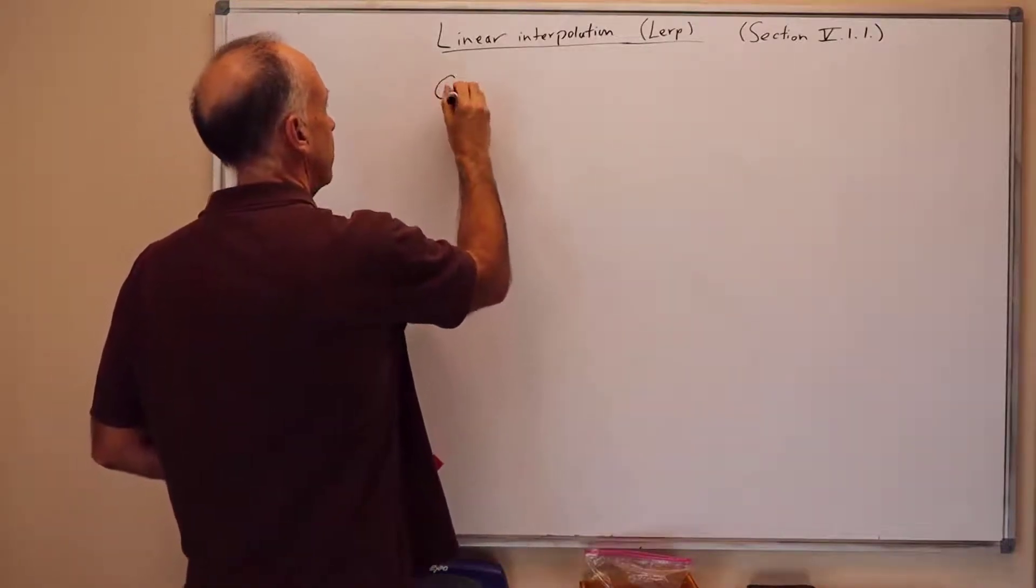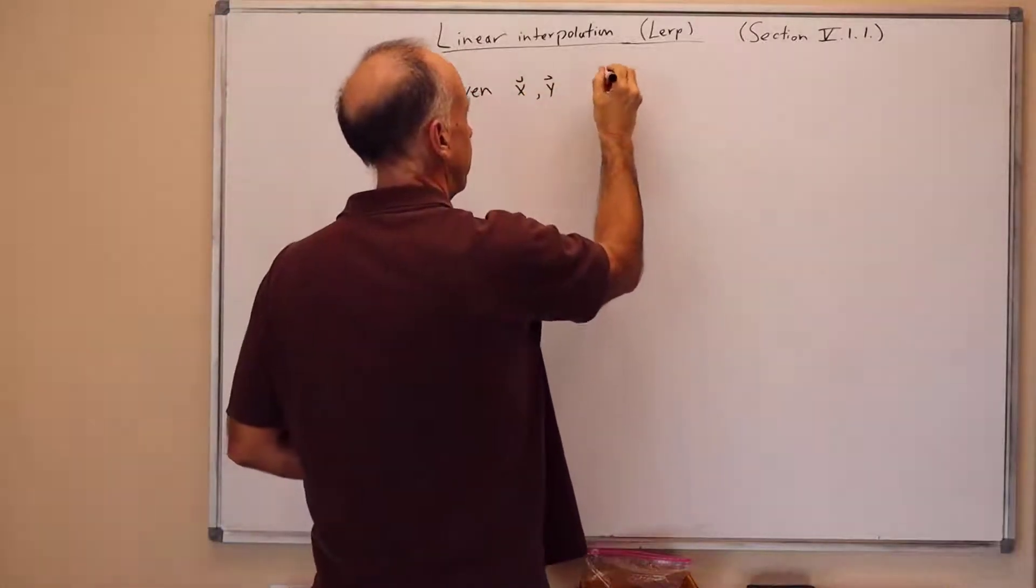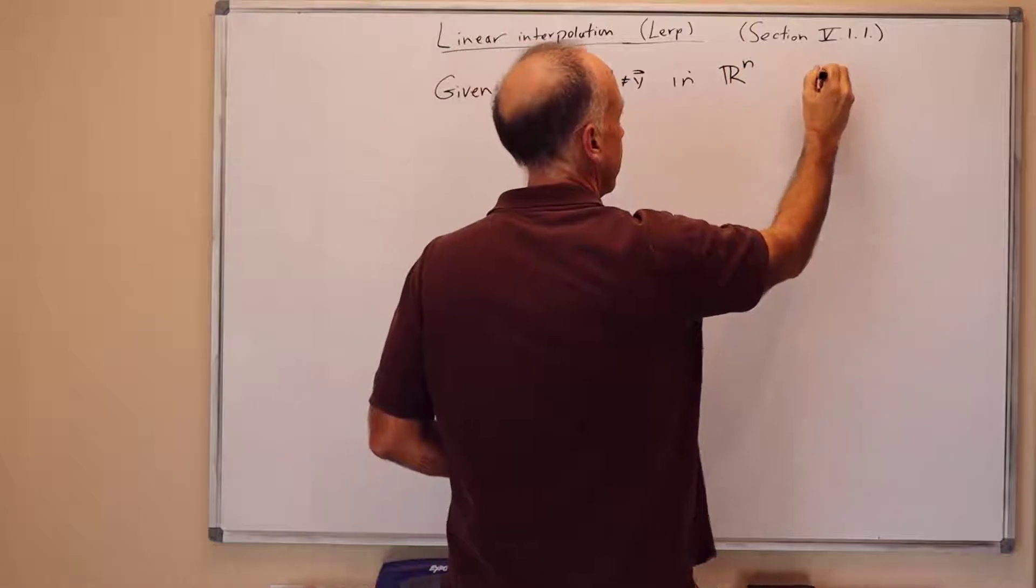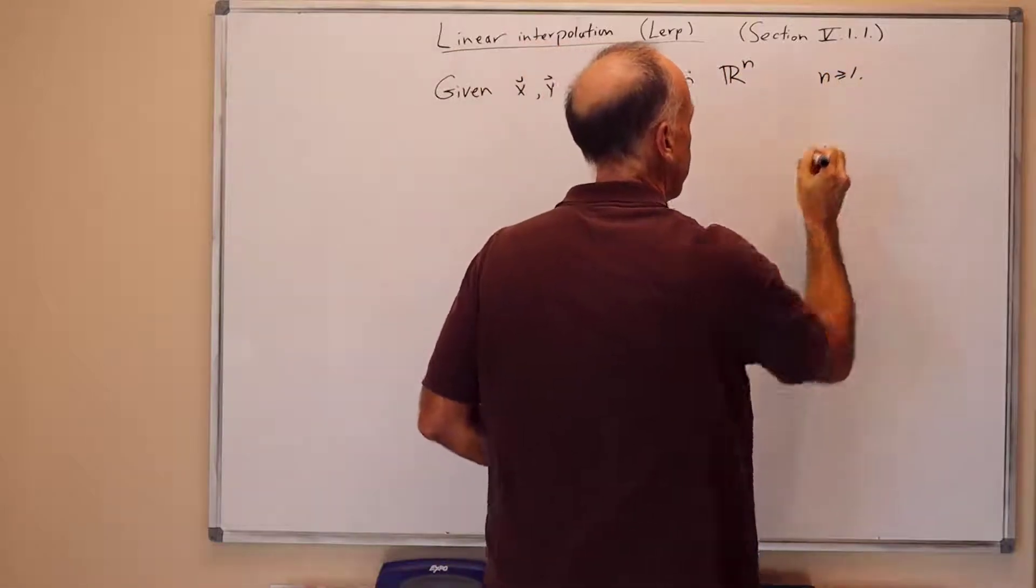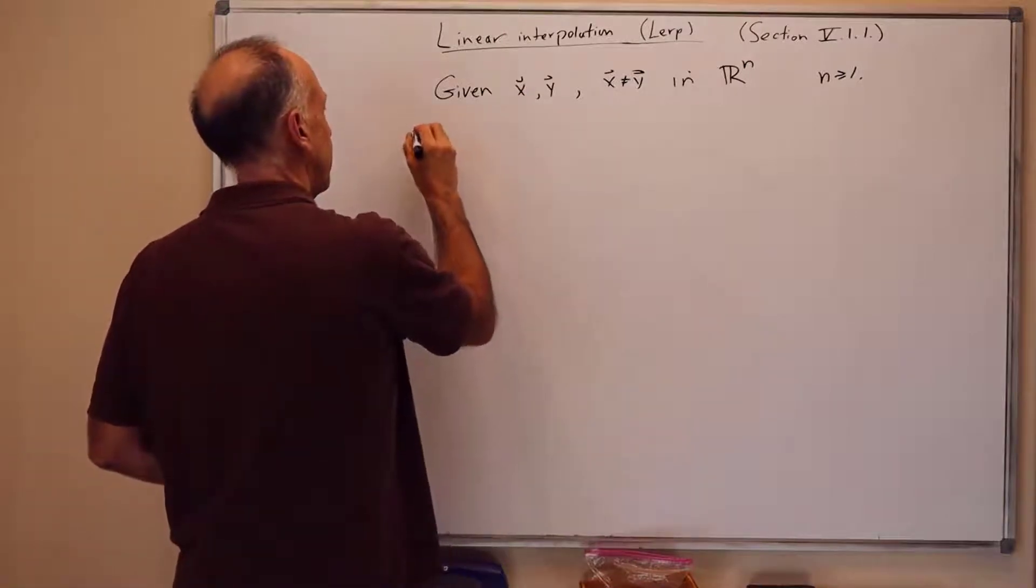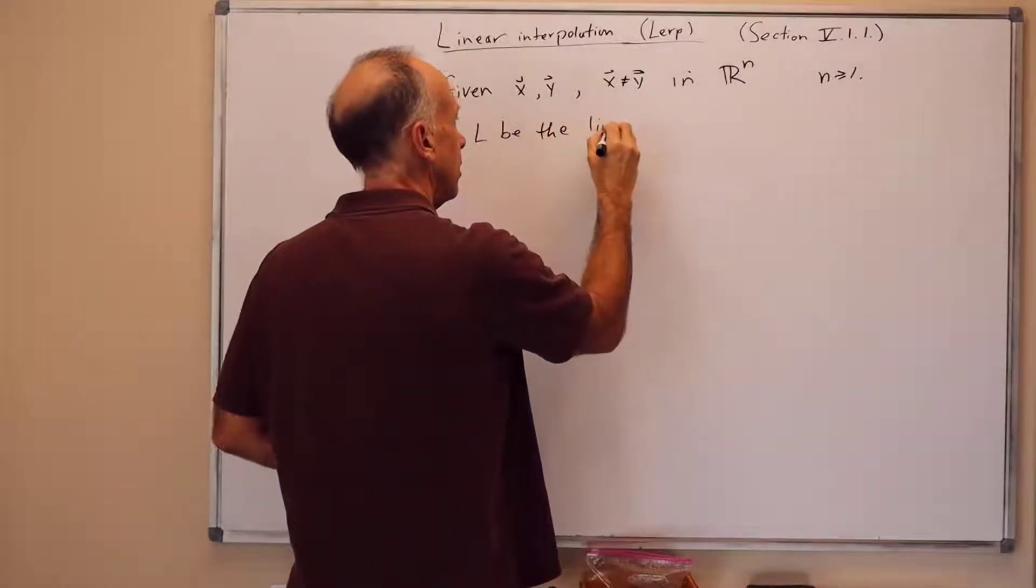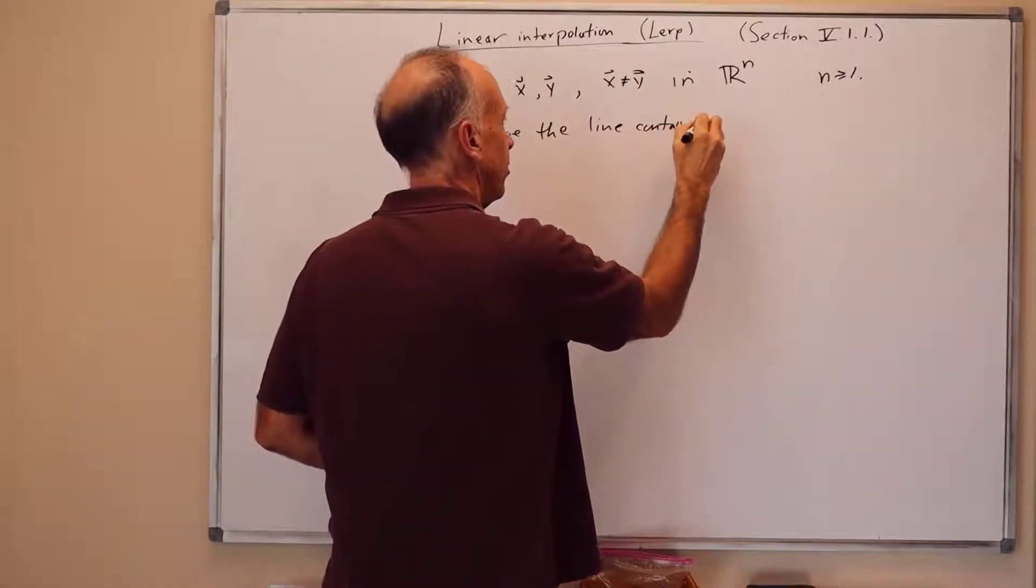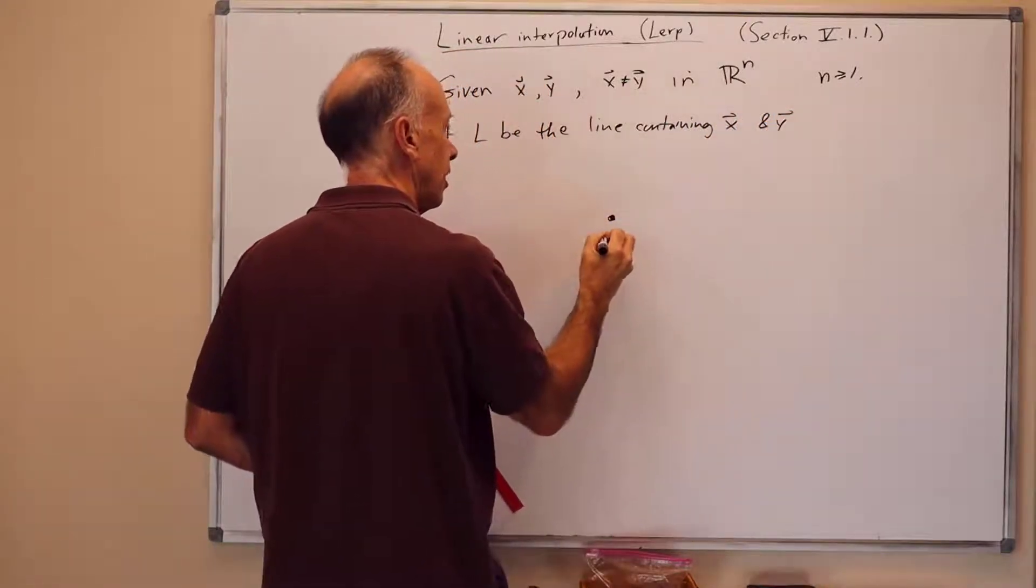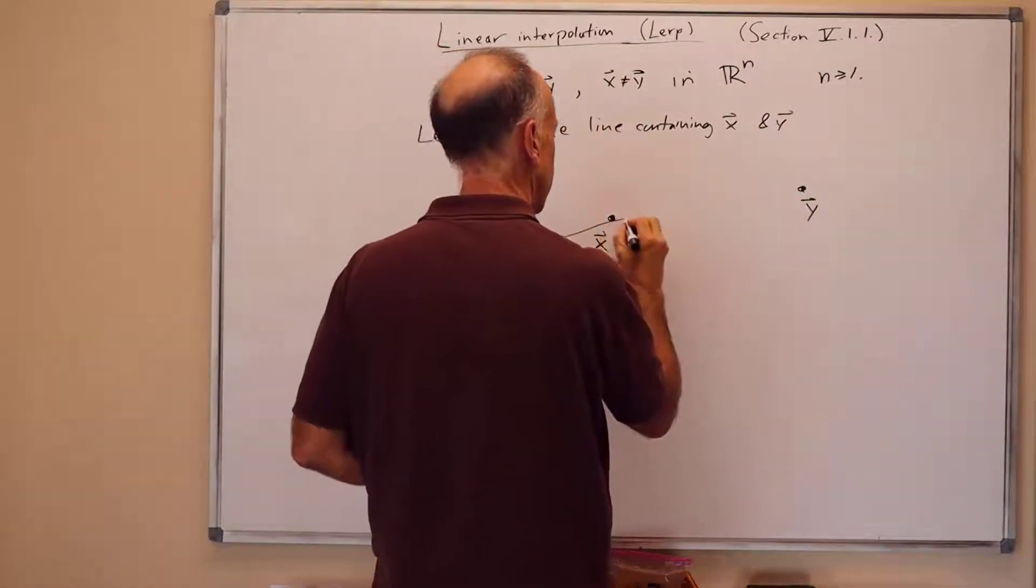For linear interpolation or LERPing, we're given two distinct points x and y, x not equal to y, in some n-dimensional space Rn, where n can be greater than or equal to 1. Even the case of n equals 1 is interesting. Let L be the line containing these two points. So here's x, here's y, here's the line containing them.